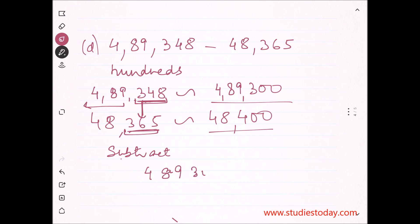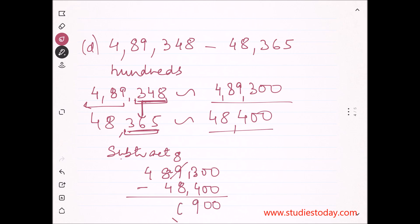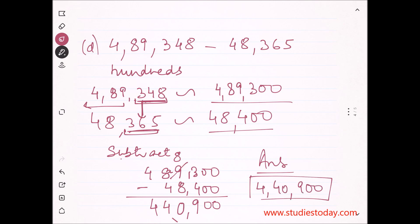Now we subtract using the rounded-off numbers: 4,89,300 minus 48,400. Working through with borrowing: borrow from the next column — 13 minus 4 is 9, then 8 minus 8 is 0, then 8 minus 4 is 4 — giving us the answer 4,40,900 by rounding off to nearest hundreds.